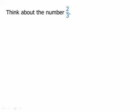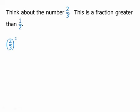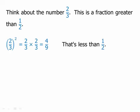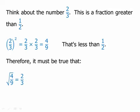Think about the number 2 thirds — a fraction greater than 1 half. If I square it, I get 4 ninths, which is a number less than 1 half. Therefore the square root of 4 ninths is 2 thirds, and of course 2 thirds is greater than 4 ninths. So the square root of 4 ninths is greater than 4 ninths. This is always true for a positive number less than 1: the square root is always greater than the number itself.